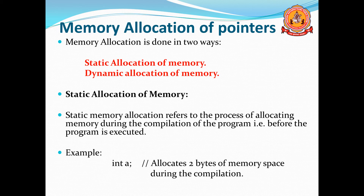Here is an example for static memory allocation. Normally if I declare int a, that allocates two bytes of memory space during compilation. This is what we did till now — that is actually static memory allocation. If you declare any variable in your program, that is known as allocation of memory, and that allocation is known as static allocation. So int a, int b, float a, float b, double a, double b — anything declared in your program is static memory allocation. That tells the compiler how many bytes are required: integer is two bytes, double is eight bytes, float is four bytes, character is one byte.